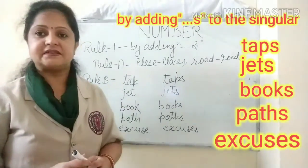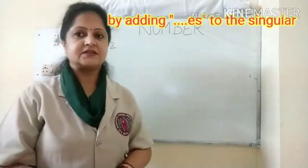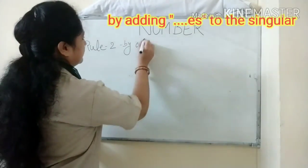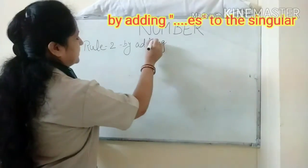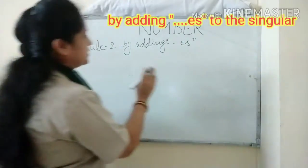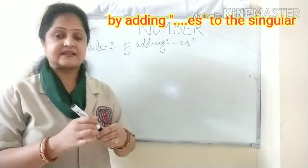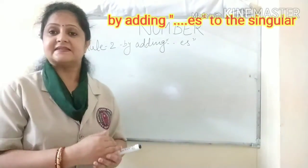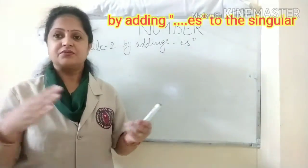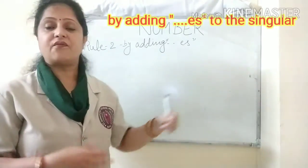Now we will start with our second rule. Rule Two: By adding 'es' to the singular number, we can form the plural. Here 'es' gives us the sound of 's'. For example: bus — buses; pass — passes; bush — bushes. All these are examples where 'es' is giving the sound of 's'.